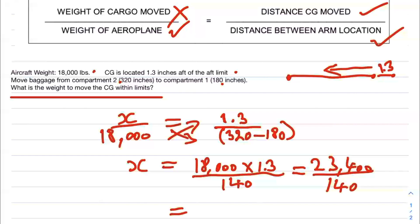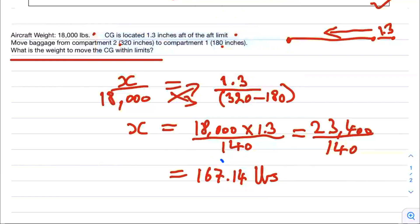That brings us to the answer of 167.14 pounds. That's the minimum weight we need to move from the aft cargo compartment to the forward cargo compartment to bring the CG within limits. We no longer have this 1.3 inches out of limits - it will be within the limits.